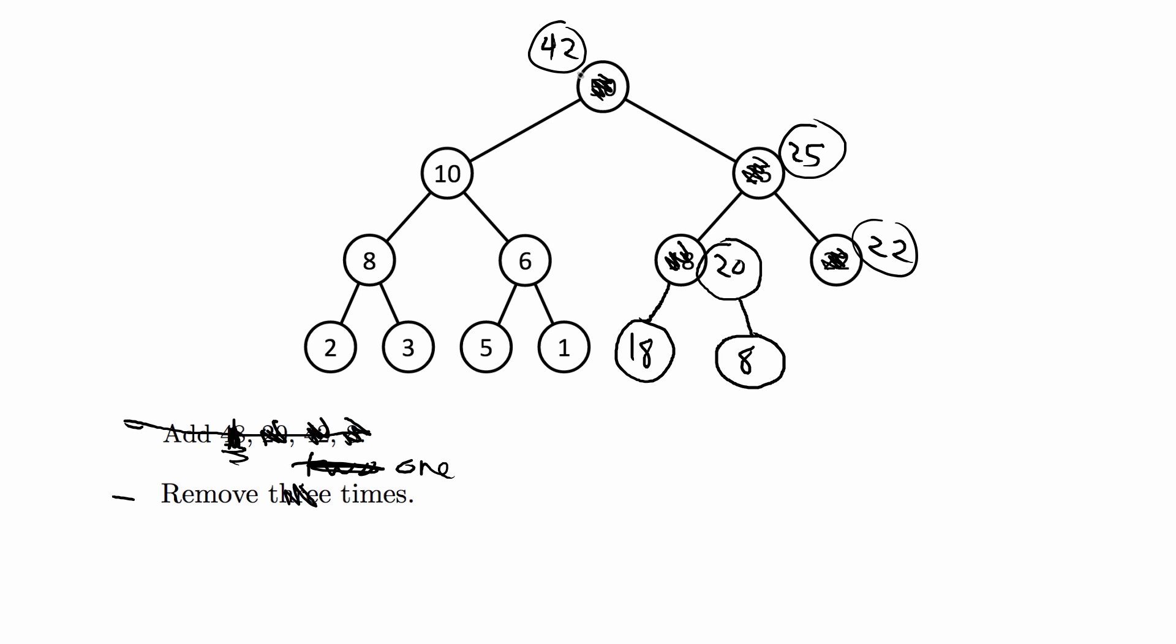So the same thing. We're going to swap 42 and 8. We're going to remove 42 and we're going to push down 8. So we're going to push up 25, add 8 here and then swap with 22. So that's going to be our final tree.